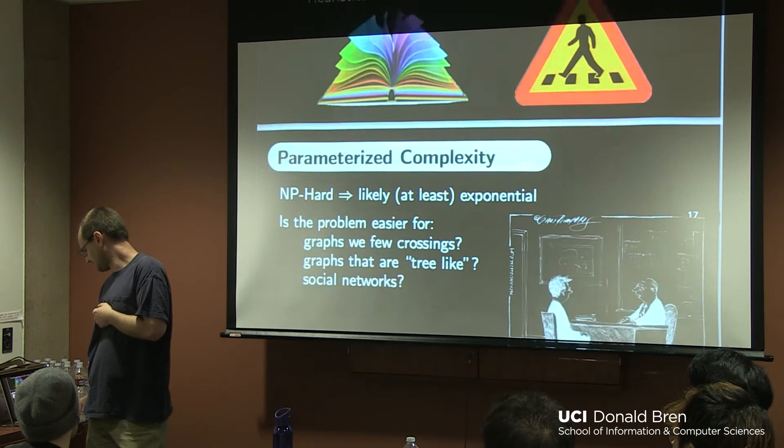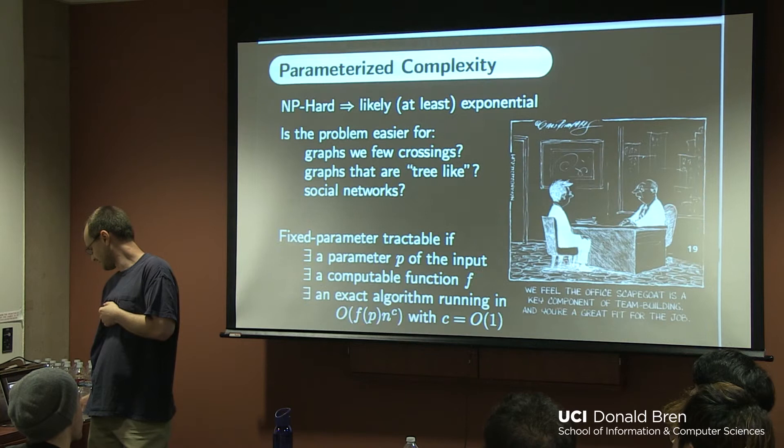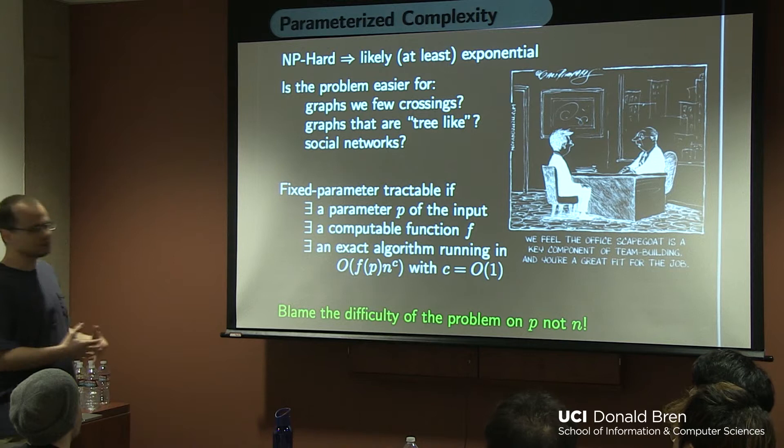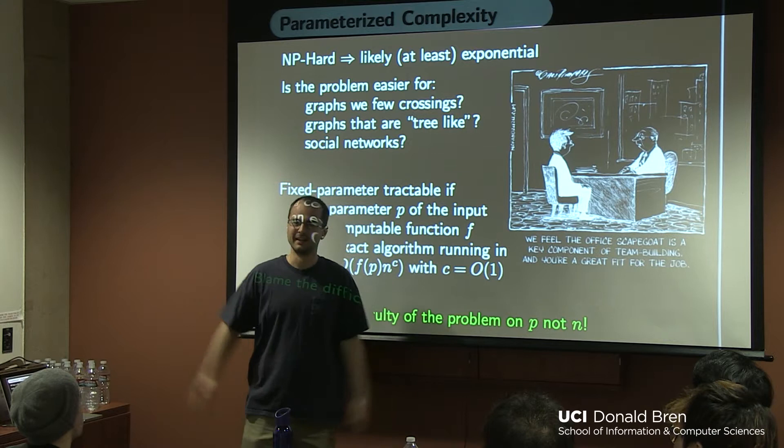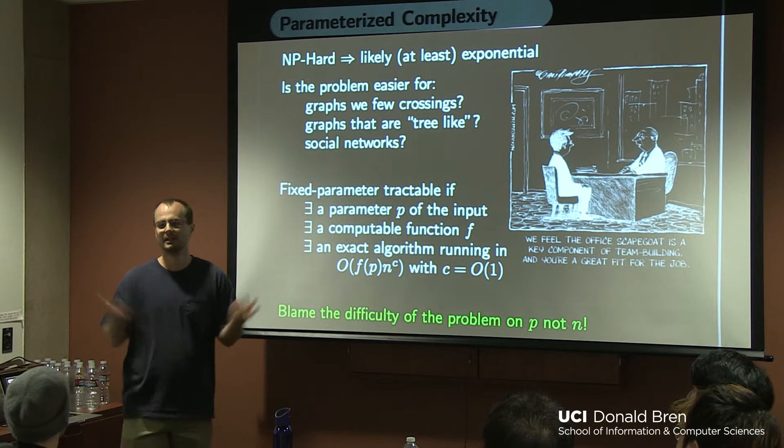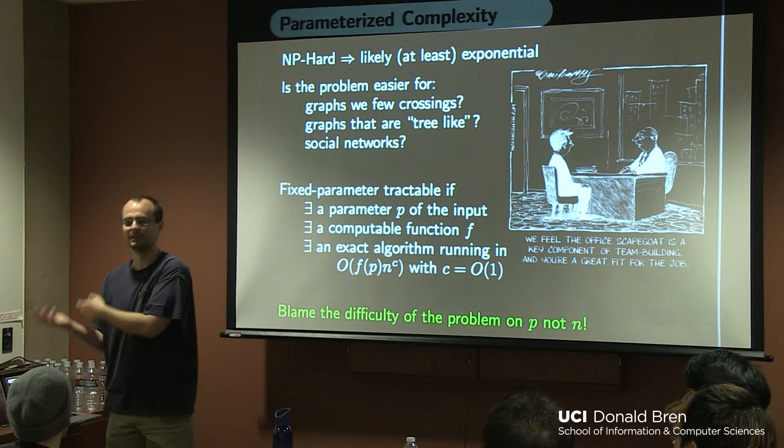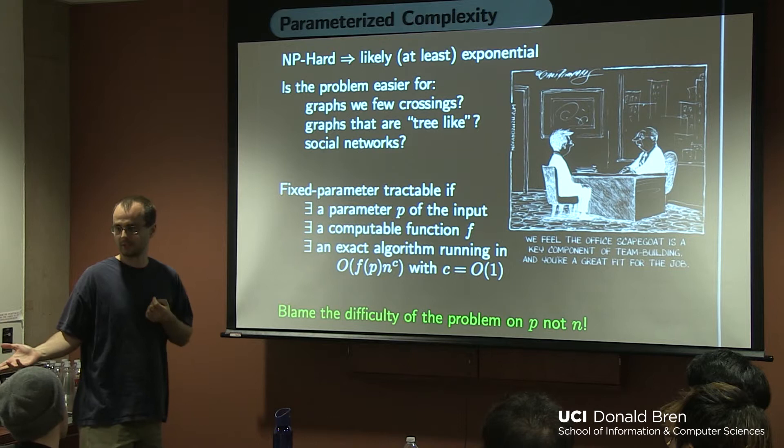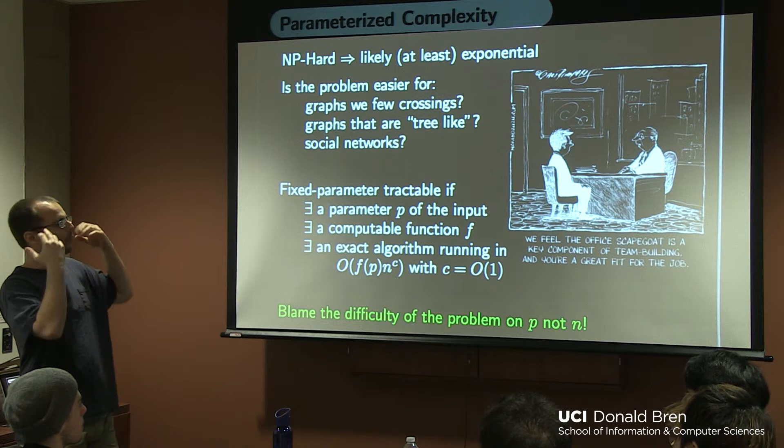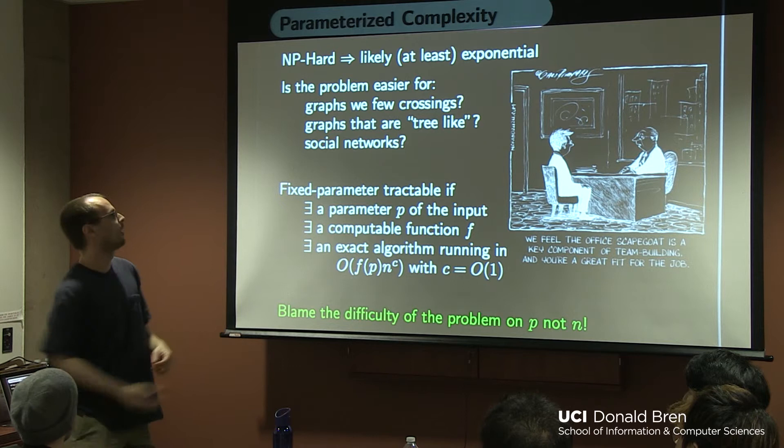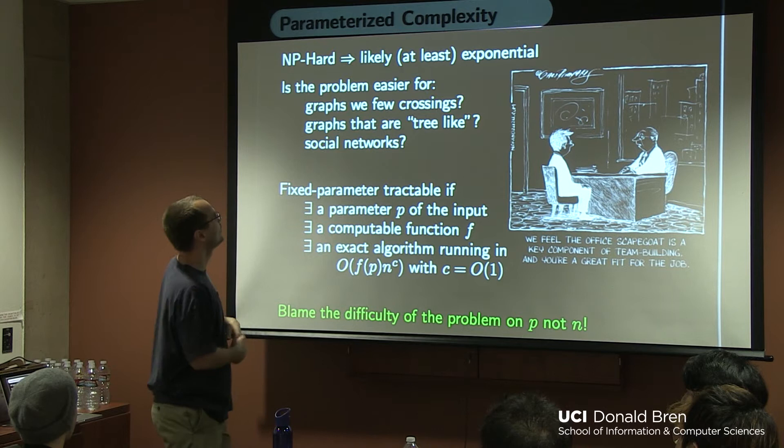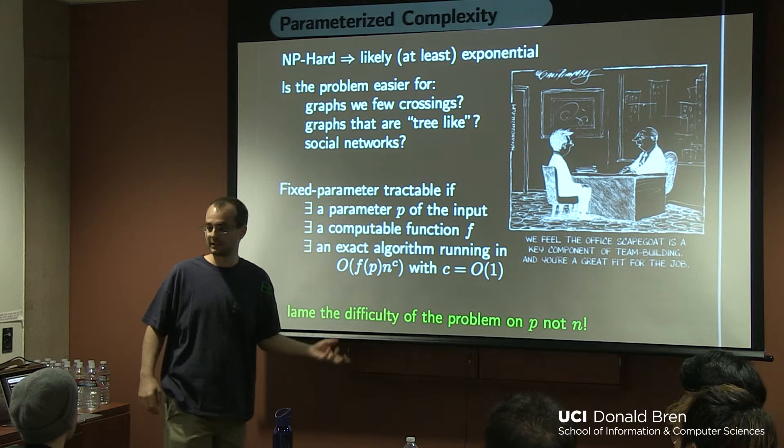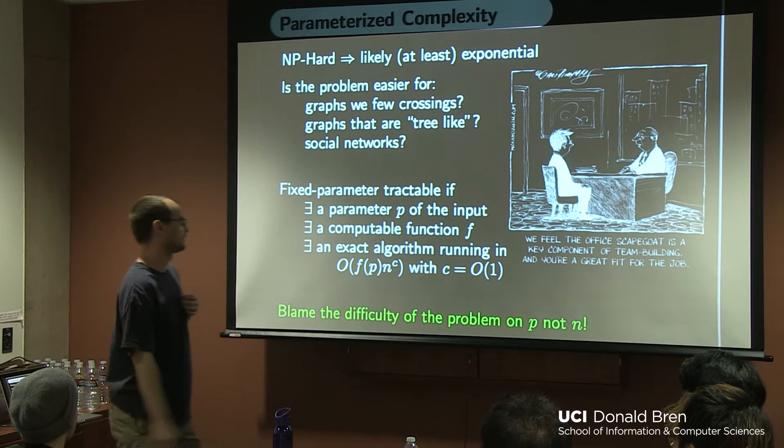So the question now is just because everything is NP-hard in graph drawing pretty much, what are we going to do? And there's two ways to attack NP-hard problems, at least from a theoretical point of view. There is approximate, and there is let's restrict the problems. We look at examples people care about and prove we can solve them in those cases. The approach we've taken is primarily the second one, restrict the problem. And the approach we take is ask, what's making the problem hard? Are graphs with fewer crossings easier? Are graphs that are tree-like easier? That's what we want because we want to draw tree-like graphs. Are social networks easier?